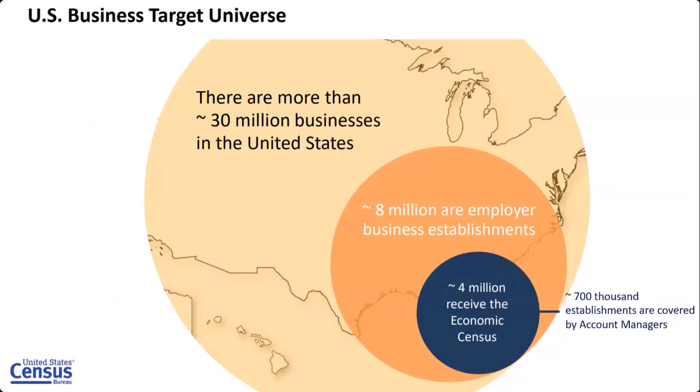There are over 30 million businesses in the U.S., but only 8 million of them have paid employees — that's the scope of the Economic Census. Only 4 million of them will be included for direct collection of data; the remainder will be covered by administrative records. Of the ones we directly collect, about 700,000 establishments will be covered by account managers — employees at the Census Bureau who work directly with larger businesses to assist them with reporting.